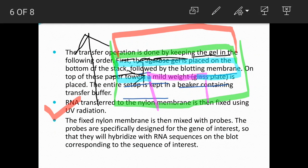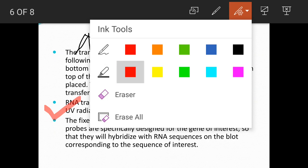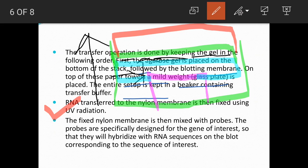In the next step, the nylon membrane is mixed with the probes. Probes are short oligonucleotide sequences, approximately 100 to 150 nucleotides long, and they are tagged with the detector molecule. Radioactive label detector molecules bind. Probes basically have a sequence complementary to the RNA sequence.